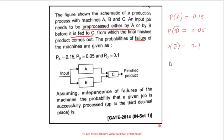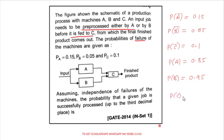From the failure probabilities, the success probabilities are: probability of A succeeding is 0.85, probability of B succeeding is 0.95, and probability of C succeeding is 0.9.